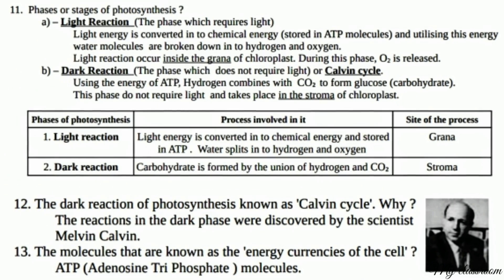Phases or stages of photosynthesis. A. Light reaction: the phase which requires light. Light energy is converted into chemical energy stored in ATP molecules, and utilizing this energy, water molecules are broken down into hydrogen and oxygen. Light reaction occurs inside the grana of the chloroplast. During this phase, O2 is released.